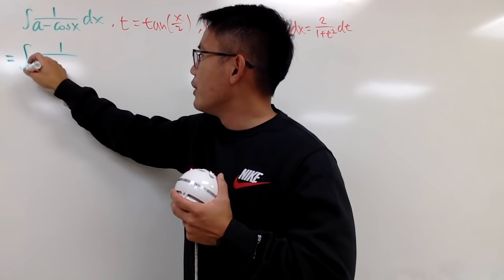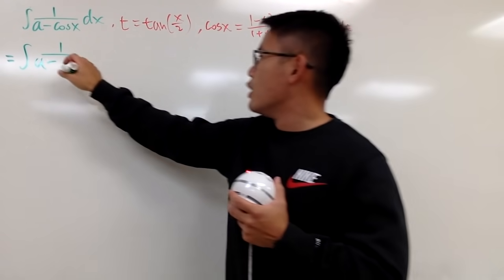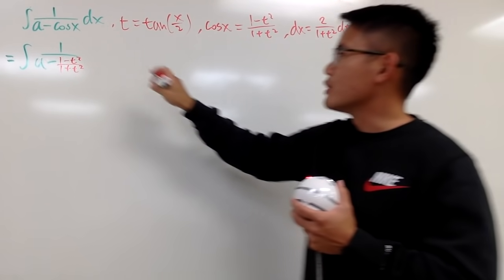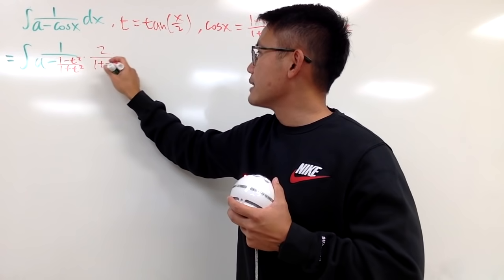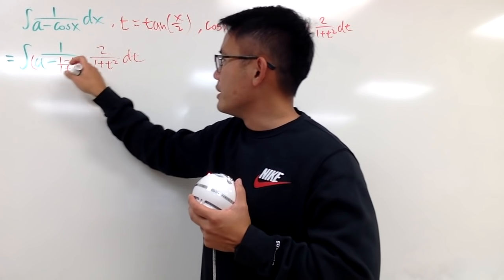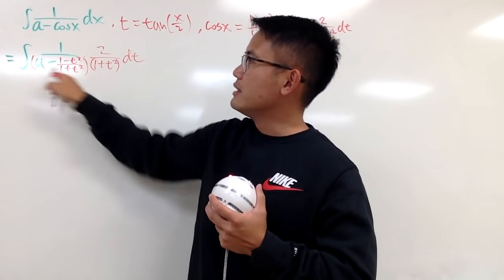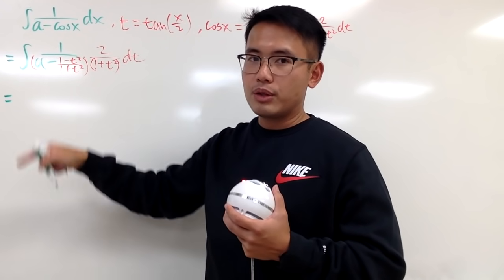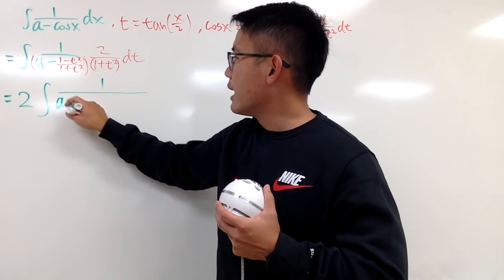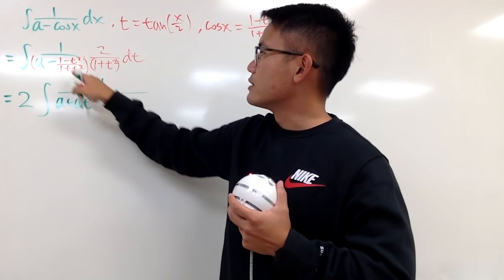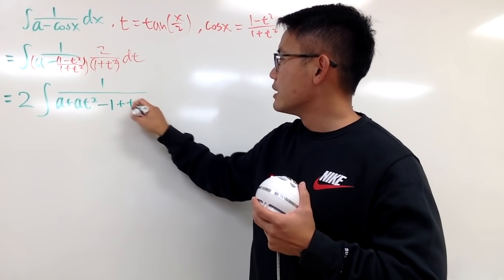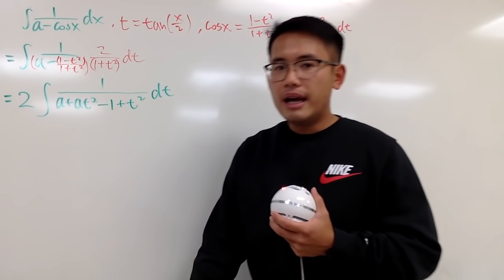So we have the integral of 1 over (a minus cos x). I substitute cos x with (1 - t²)/(1 + t²) and dx with 2/(1 + t²) dt. Multiplying through, the denominator becomes a·(1 + t²) minus (1 - t²). Putting 2 in the front, expanding and distributing the negative gives us a + at² minus 1 + t² in the denominator.